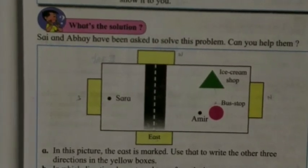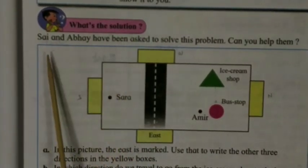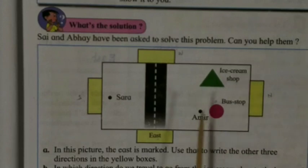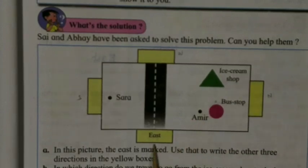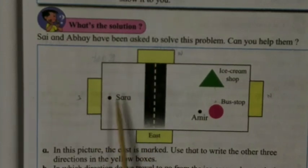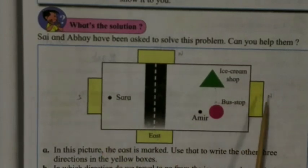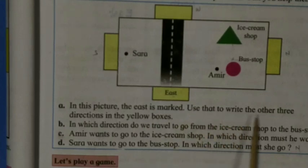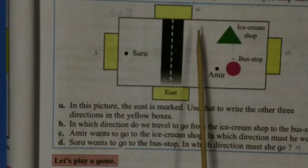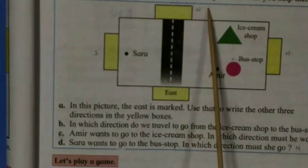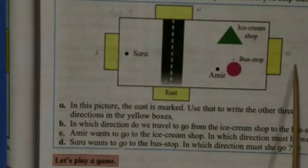Here is a nice activity. Sai and Abe have been asked to solve this problem. East is given — the opposite will be west, below will be south, and above will be north. In the picture, east is marked; use that to write the other three directions in the yellow boxes. The blue side is west, the right side is south, and the left side is north.